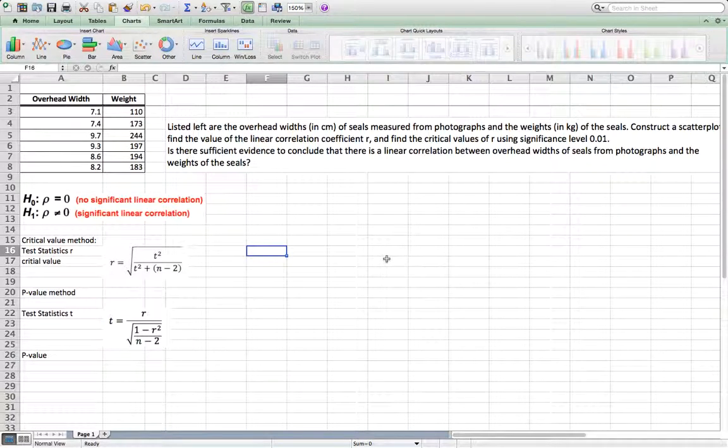This video is recorded to help my students understand how to do a test related to linear correlation. The null hypothesis is always rho equals zero, which means there is no significant linear correlation. The alternative hypothesis is always rho not equal zero, which means there is significant linear correlation.